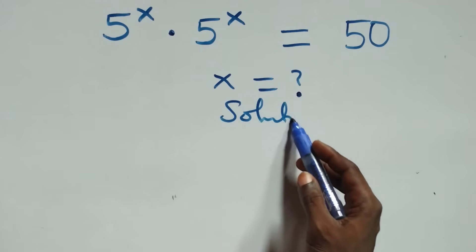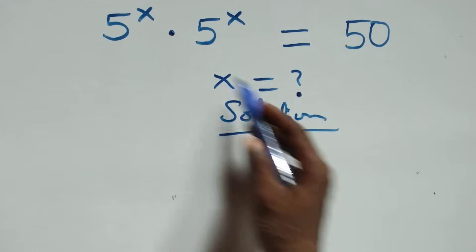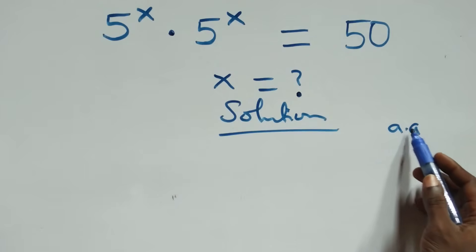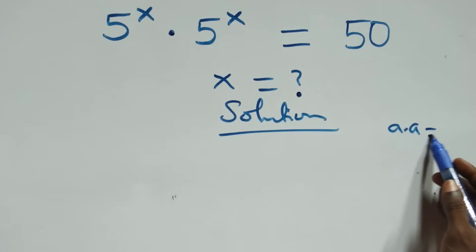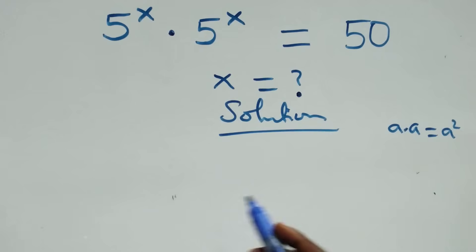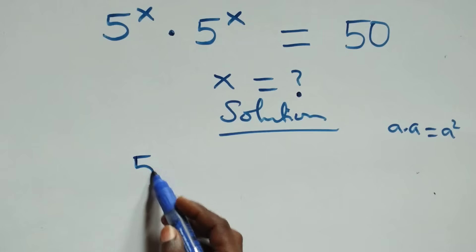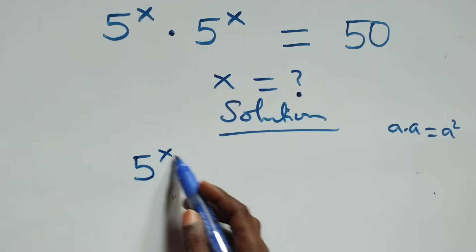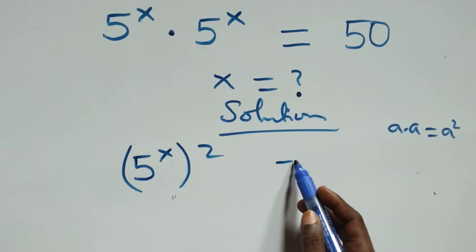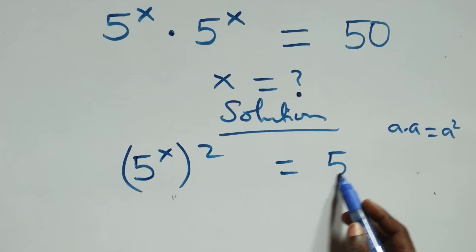Solution from here: from what we have here, this follows since we have a times a, which is the same thing as a squared. This same thing is multiplying either 5 raised to power x, or squared, then equals to 50 on this side.